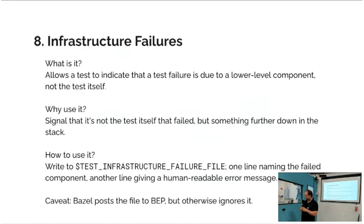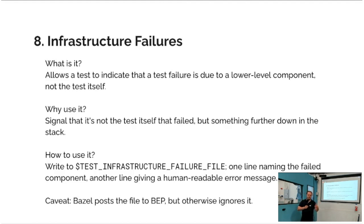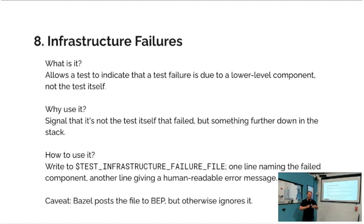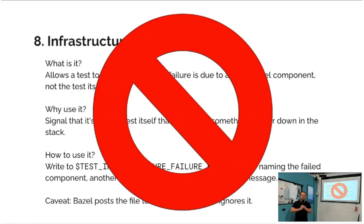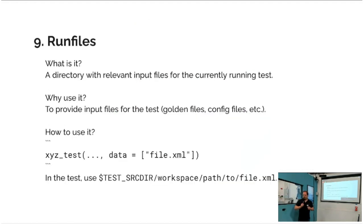Infrastructure failures, number eight: this is more relevant for integration tests. When you bring up a VM in AWS or run a Docker container and the tool or library fails — it's not your fault and not something you can easily fix — the test infrastructure failure file is your friend. The format is documented: plain text with one line naming the component that failed and another line for the error message. Unfortunately Bazel doesn't do anything with it, so it's not recommended right now.